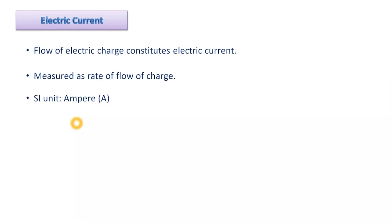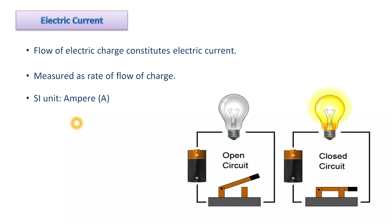Here is a simple example to show that electric current flows through a circuit. Take a bulb and a battery. If you observe the battery, you will see it has two terminals — a positive terminal and a negative terminal. You connect the positive and negative terminals of the battery to the two terminals of the bulb, and that is how you prepare a circuit.